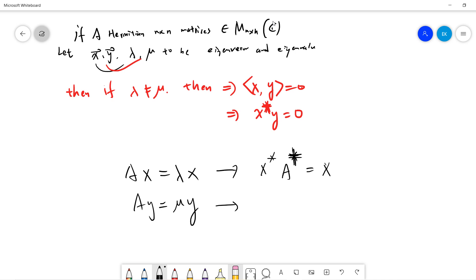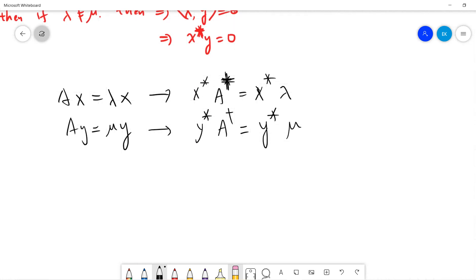We can take a theorem we proved before that the eigenvalues must be real. And then we also have y dagger A dagger equals y star mu.